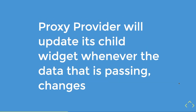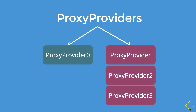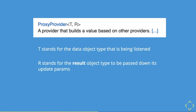So what is the difference amongst these proxy providers? Like I said earlier, there is proxy provider zero and the others. If you see in the documentation for proxy provider zero, you could see it is missing a T, and the rest have one or more T. So what are T and R? T stands for the data object type that is being listened, while R stands for the result object data type to be passed down in its update parameter.